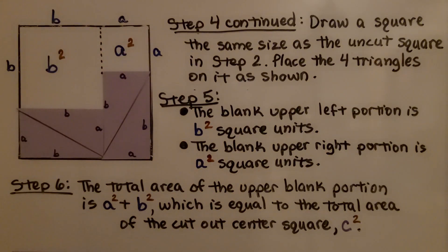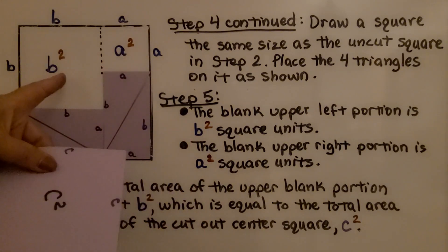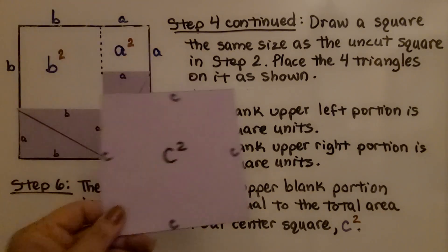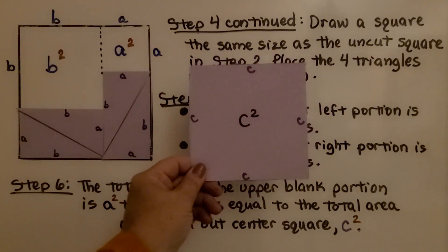The total area of the upper blank portion is a squared plus b squared, which is equal to the total area of the cutout center square, c squared. This a squared area and this b squared area is equal to this c squared area.